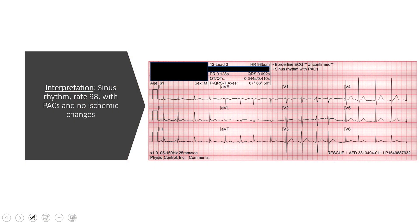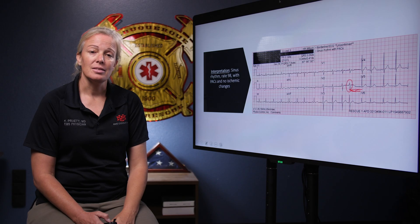So if we look at our 12-lead one more time, now that we know what PACs are, we can start to identify them better. This P wave looks a little different than this P wave, and the next beat that's a little bit early is this one — regular, regular, regular, here's our PAC. The PR is a little bit shorter, we have that characteristic pause afterwards, but a narrow QRS, and then the heart goes right back into its regular rhythm. I would call this a normal sinus rhythm, rate of 98, with PACs and no ischemic changes. And that's all for today.